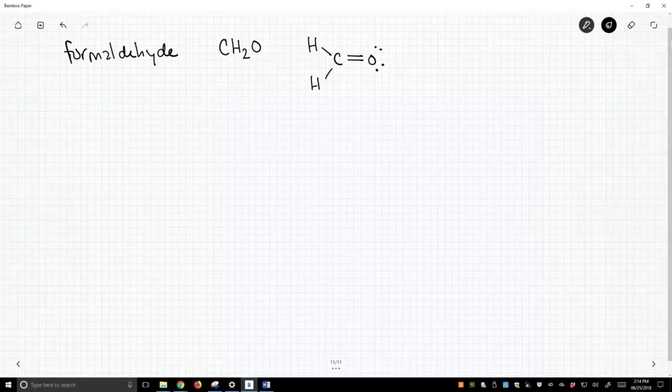So when we talk about hybridization, we normally only think of atoms that are not terminal atoms, atoms that are central. So this carbon is central to this molecule. It's attached to multiple other atoms.